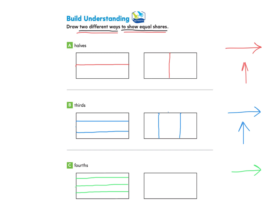I need to try a different way to show the same equal shares on the other rectangle, so I'm going to go up and down, vertical. I go right to the middle and make my line, then I find the middle point of each section I created and make a straight line, and the same on the other side. So now I have created a different way to make fourths.